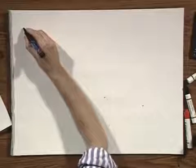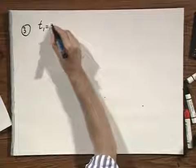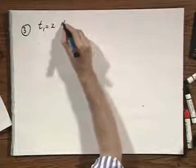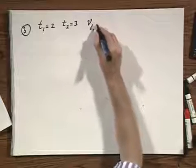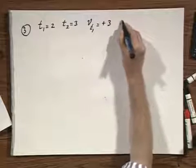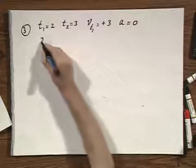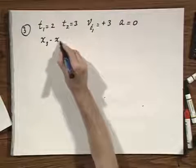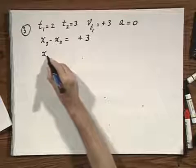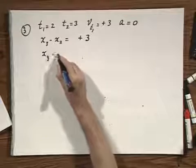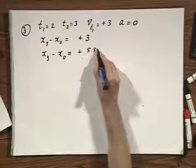For the third second, t_1 equals 2, t_2 equals 3, v at t_1 equals plus 3, and a equals 0. We find x_3 minus x_2 equals plus 3 meters, and so x_3 minus x_0 becomes plus 5.5 meters.